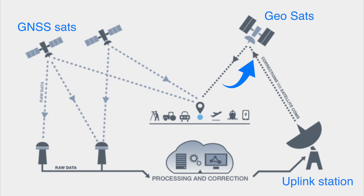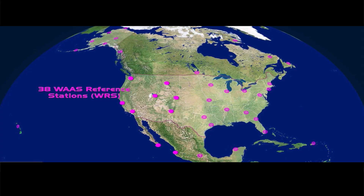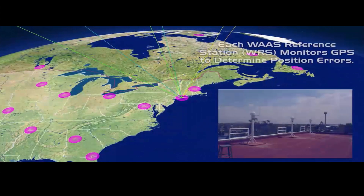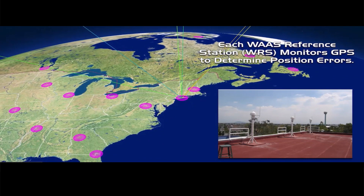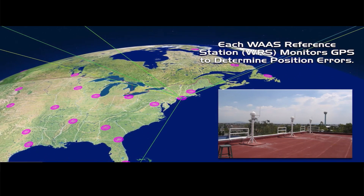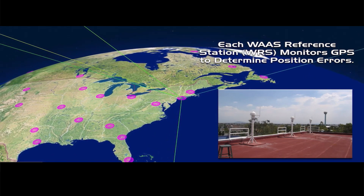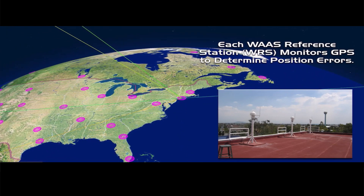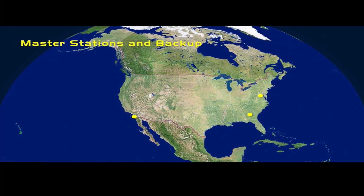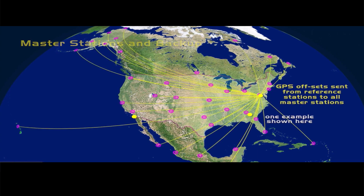In simple terms, the sequence is as follows: the SBAS consists of reference stations placed across the area of coverage. The job of these stations is to monitor GNSS to determine position errors. Then we have master stations, where position errors are sent to and processed, and then a correction message is generated.